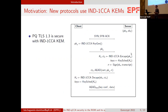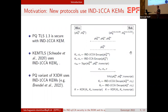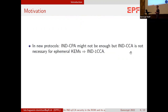In several new post-quantum variants of existing protocols, we can use IND-1-CCA KEMs. For instance, in PQ-TLS 1.3 where we replace Diffie-Hellman with a KEM, we can use an IND-1-CCA KEM. Also in KemTLS, there are two KEMs in that construction: one for static keys and one for ephemeral. For the ephemeral one, we can use the IND-1-CCA KEM. There are also post-quantum variants of X3DH where we can use IND-1-CCA KEMs, such as the one by Brenner et al. So in these new protocols, IND-CCA might not be enough, but IND-CCA is not really necessary for the ephemeral KEM.